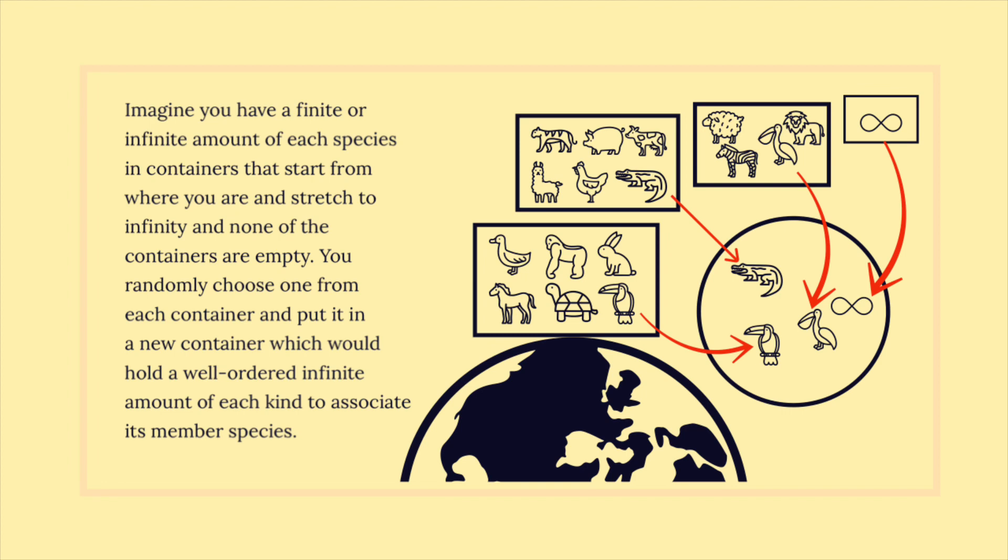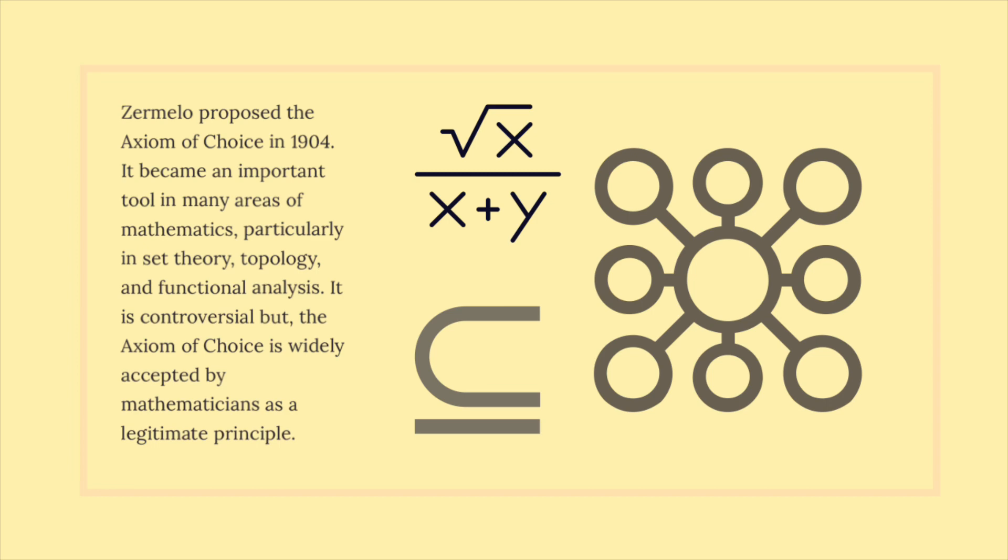Imagine you have a finite or infinite amount of each species in containers that start from where you are and stretch to infinity and none of the containers are empty. You randomly choose one from each container and put it in a new container which would hold a well-ordered infinite amount of each kind to associate its member species.